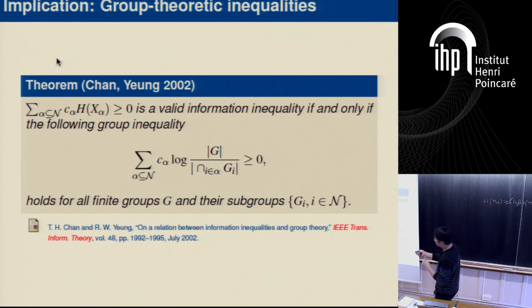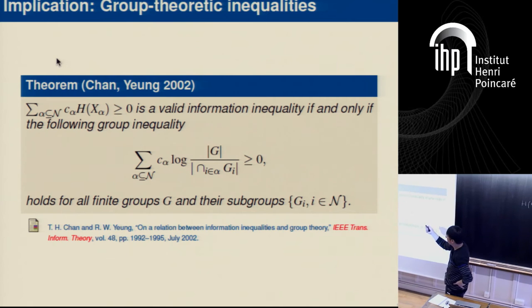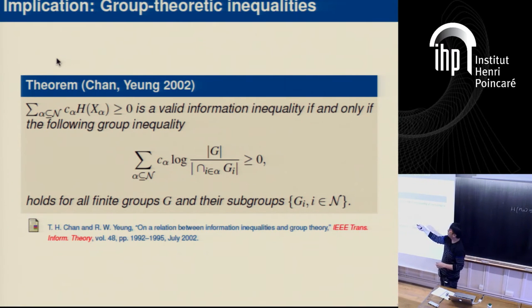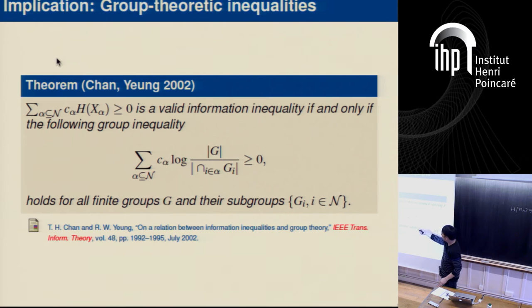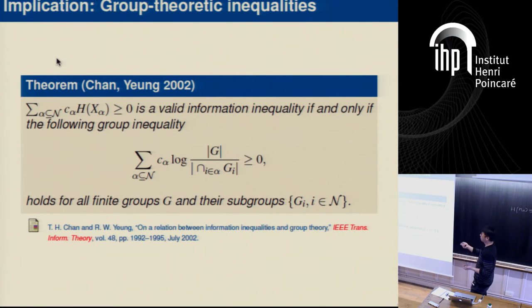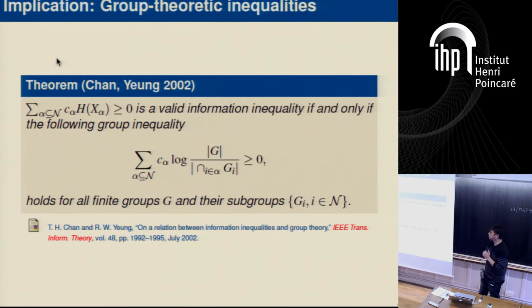The main result — published in this paper — is: if an information inequality is valid for any random variable, then it is also valid for random variables induced by groups. Plugging in the entropies of group-induced random variables, we get an inequality involving only the sizes of the groups and subgroups.